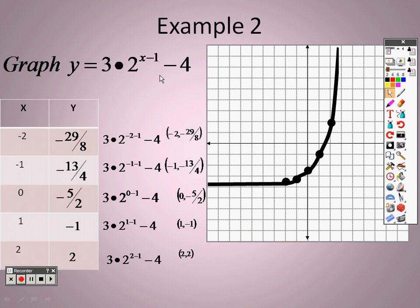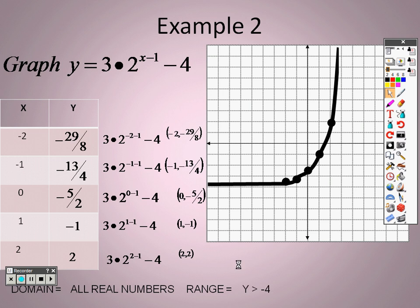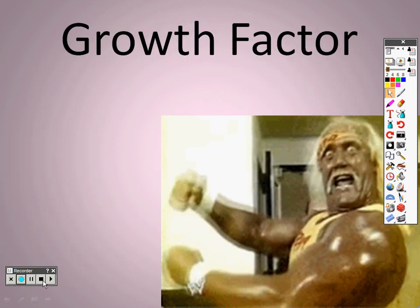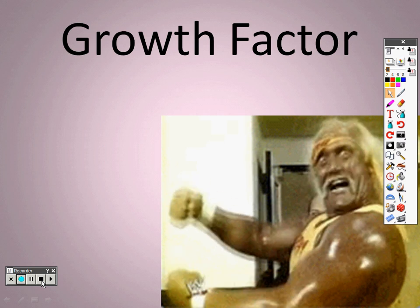The other thing to keep in mind is the number out in front determines the direction of the graph. If you look at the last graph — that coefficient was negative and the graph went down. When it's positive, the graphs go up. So whatever sign this number happens to be determines the direction the graph is going. When we come back, we will take a look at the growth factor.